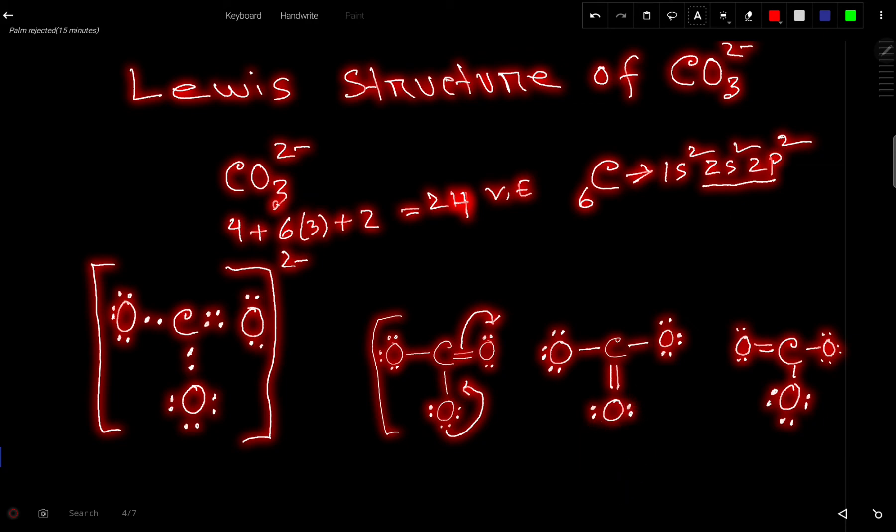And if you move electron, this structure and this structure are resonance structures because here we are just moving electrons, not atoms. So if this bond pair comes here, then this will go here. So we are getting this structure.